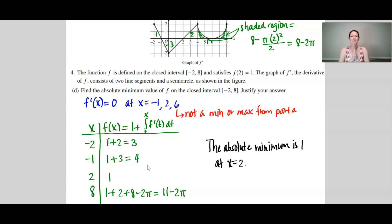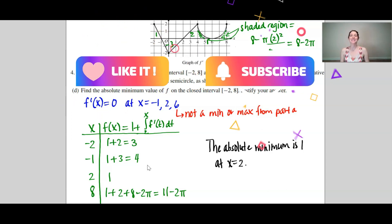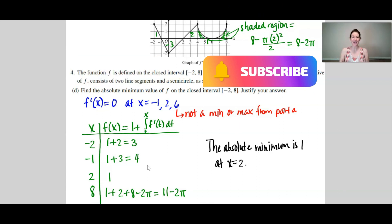All right, everyone, that is number 4 from the AP Calculus AB and BC exams from 2023. If you thought this was helpful, make sure to give it a like and subscribe so that you can see the other 5 and 6 so that you are notified when 5 and 6 come out from the 2023 AP Calculus exam. All right, everybody, have a great day, and we'll see you in the next video.